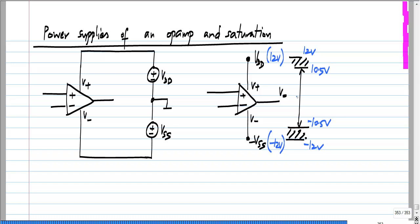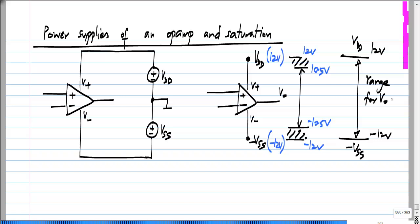In reality, the limits on V_naught will be a little less than the power supply values — it cannot go all the way up to V_DD nor all the way down to V_SS. In the absence of any information about the details of the op amp, we frequently think of the range of V_naught as being the entire range between V_DD and minus V_SS. In addition, the input voltages V_1 and V_2 must each be limited to some range, and in absence of further details we can think of V_1 and V_2 as also being limited to that same range.